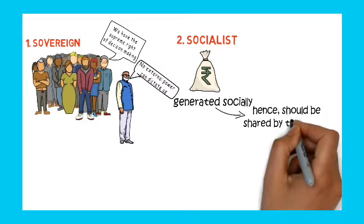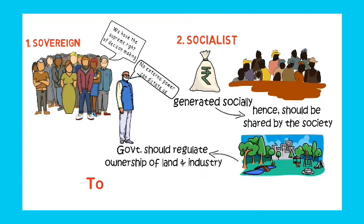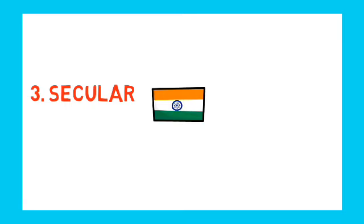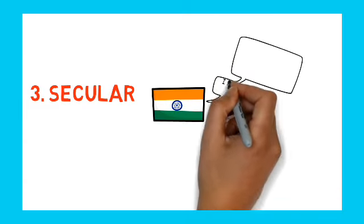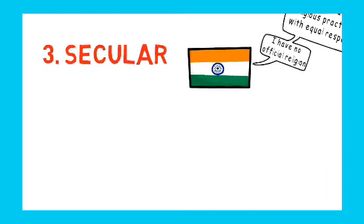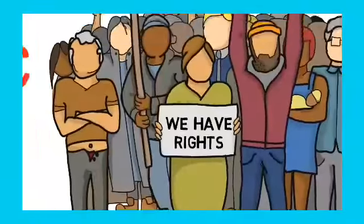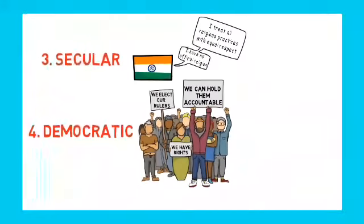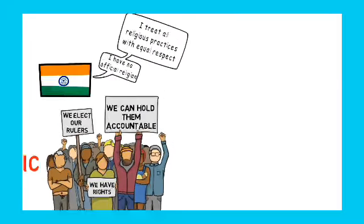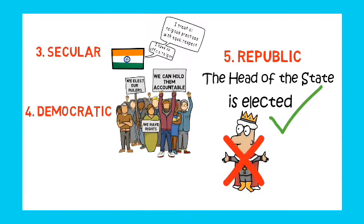Nine things you may observe in the preamble: sovereign means we have full and supreme powers, we need not follow others' rules. Our country is a socialist country, so all sections of society must contribute according to their skills. Our country is a secular country — we are not giving priority to one religion. Democratic means every person regardless of caste, religion, or gender can participate. Republic means the head of state is elected.